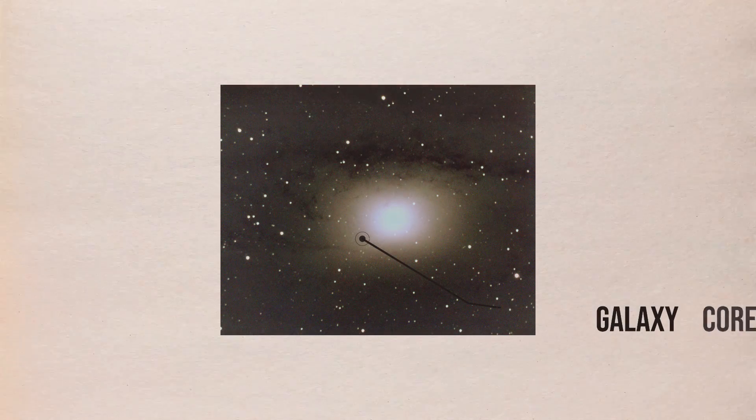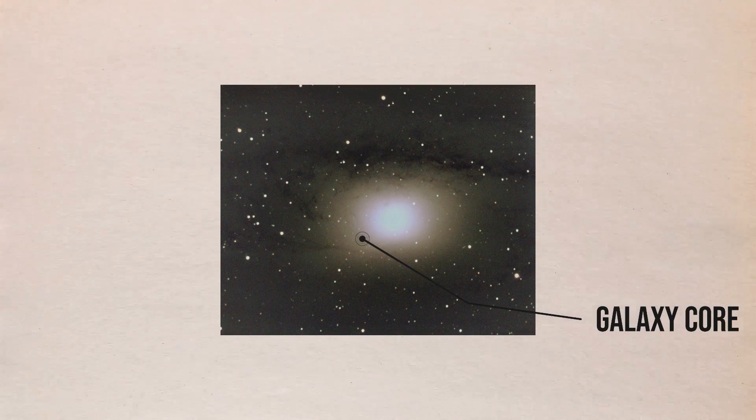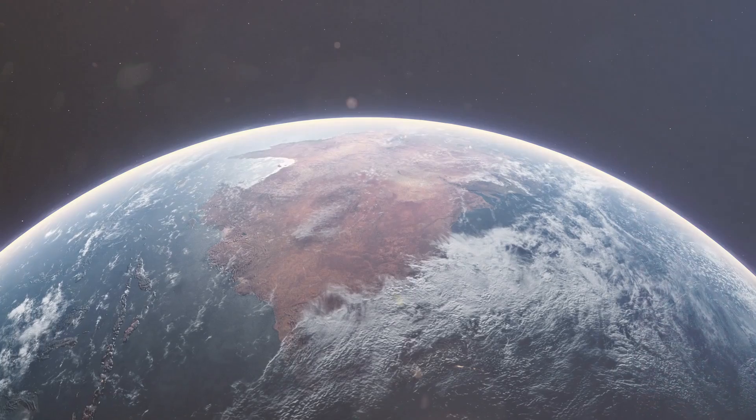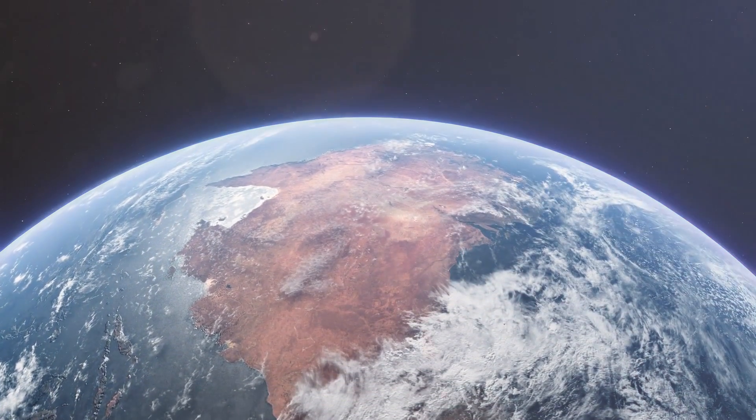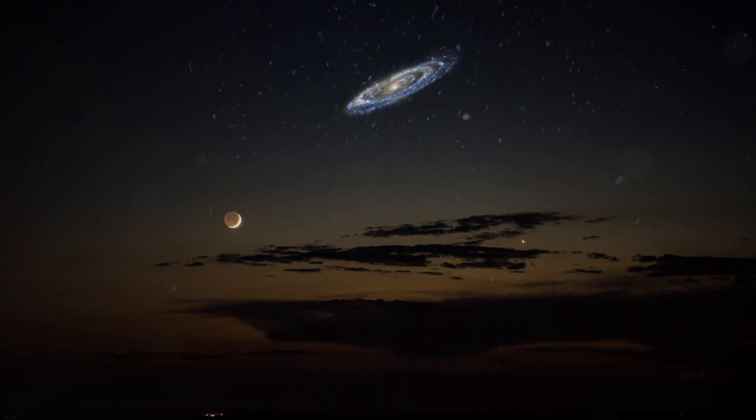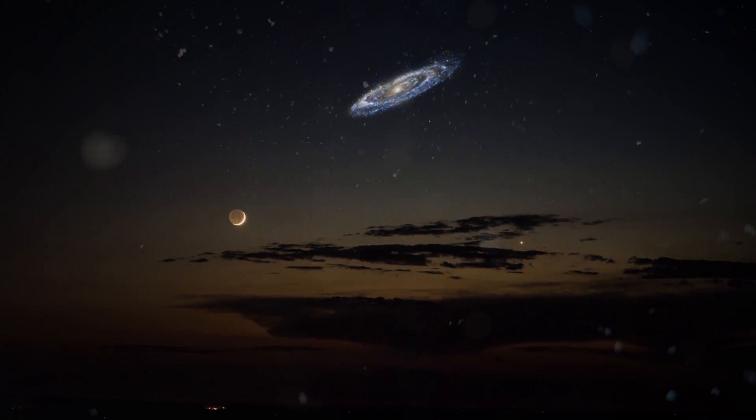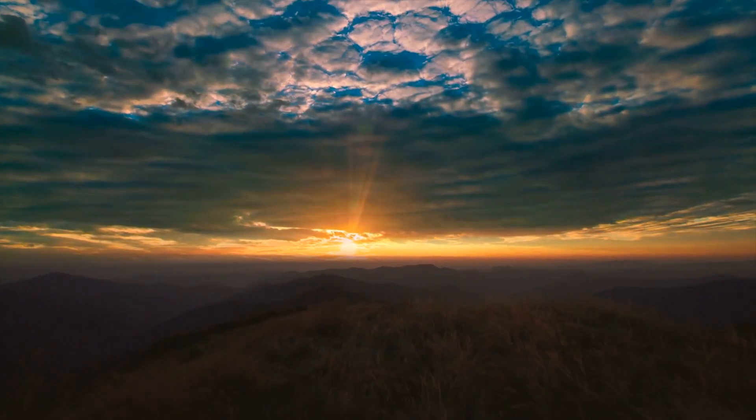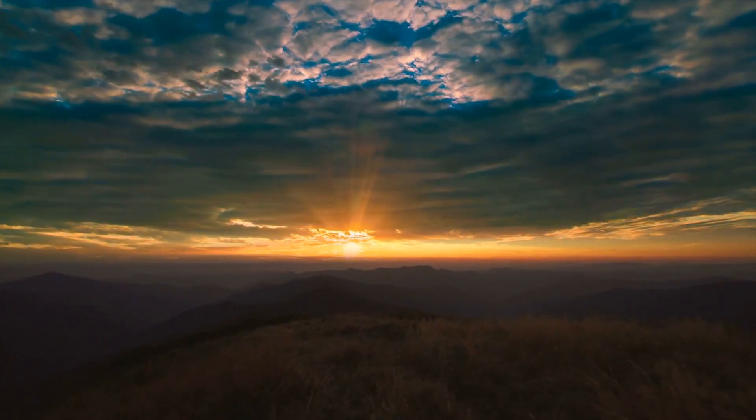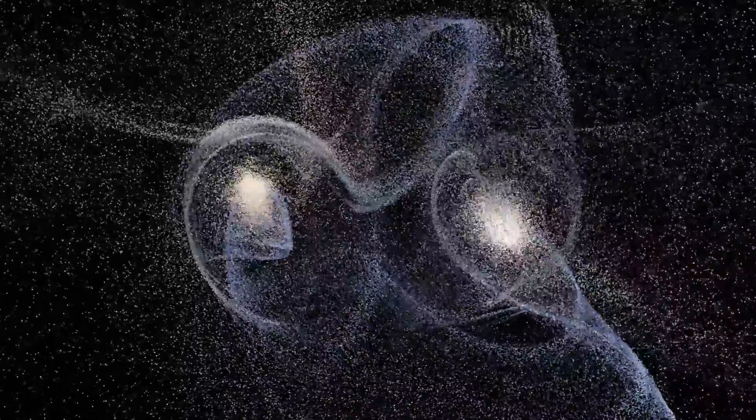The Andromeda galaxy's core is now roughly 2.5 million light-years distant from Earth, and it's coming closer all the time. As previously indicated, the Andromeda galaxy will look bigger in our sky as it approaches. Any beings alive on Earth will observe it grow larger and larger in our night sky between now and the final merging.